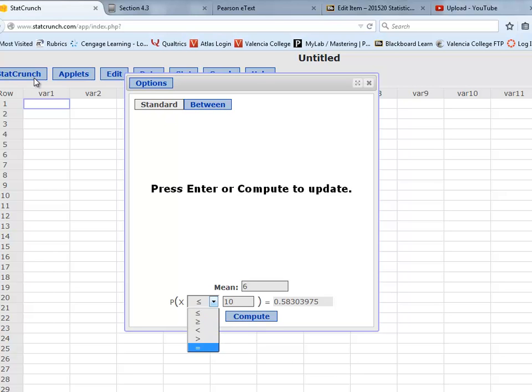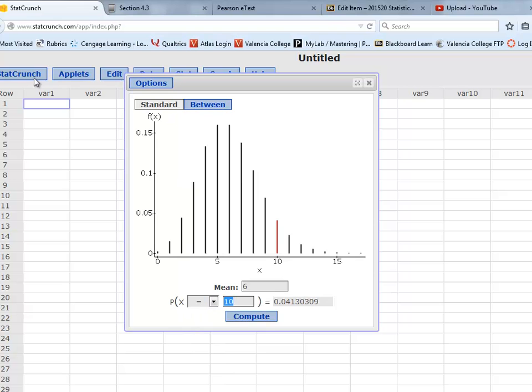And then I'm going to choose exactly equal to 7. And when I click Compute, it's going to plug into the formula that you saw in the lecture video and produce the probability that we've requested.